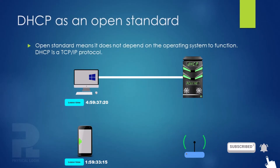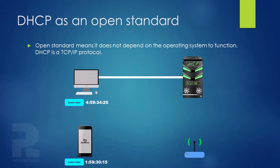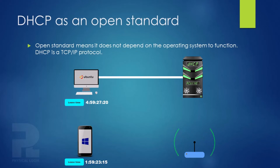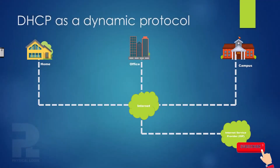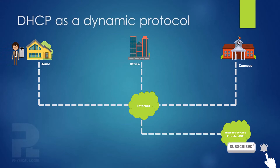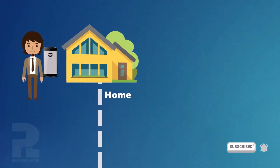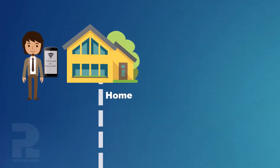The dynamic feature of DHCP ensures that a device will not always have the same IP address on every request unless it has been manually specified in the server configuration through address reservations. The dynamic feature of DHCP also allows mobility. This means if you connect to your home network, you automatically get an IP address.